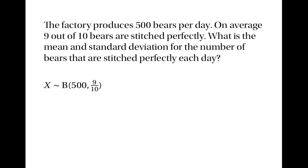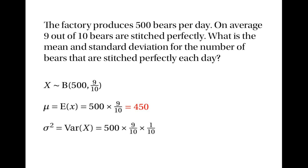Here we're dealing with a random variable that has the binomial distribution with 500 trials and 9/10 as the probability of success. So the mean can be calculated by multiplying 500 and 9/10, which is 450. The variance can be calculated by multiplying 500 and 9/10 and 1/10, which is 45.